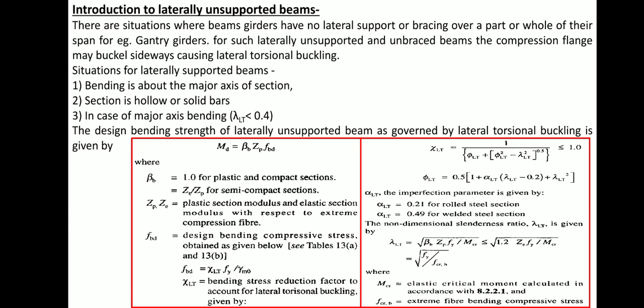In the formula for laterally unsupported beams, Md is given as beta_b times plastic section modulus multiplied by fbd, where fbd is the design bending compressive stress obtained from Table 13a or 13b depending on whether the section is rolled or welded. This fbd is calculated as chi_lt times fy divided by gamma_m0, where chi_lt is a multiplying factor that reduces the strength fy due to lateral torsional buckling.